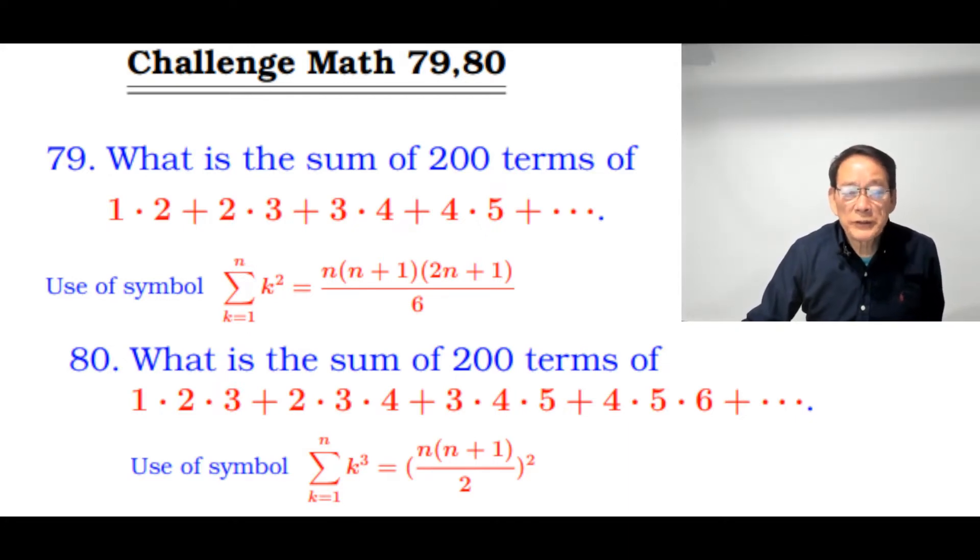What is sum over 200 terms of 1 times 2 plus 2 times 3 plus 3 times 4 dot dot dot. And number 80, what is sum over 200 terms of 1 times 2 times 3 plus 2 times 3 times 4 plus 3 times 4 times 5 plus dot dot dot as you see here.